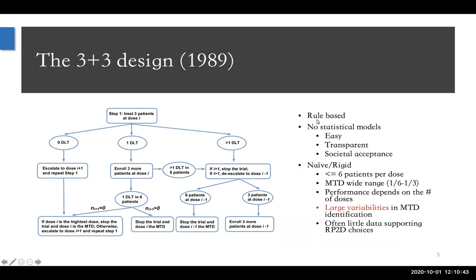To summarize: the 3+3 is a rule-based design with no statistical models, which makes it very easy to understand, especially for clinicians and non-statisticians. It's transparent — all decision rules are pre-specified. There's societal acceptance, especially in the clinical community. Some of the main problems we've known for years: it's pretty naive and it's rigid.